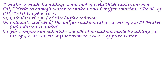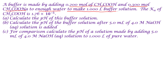Hello, everyone. Here is a buffer problem, which is multi-part, and we're going to address this problem one by one. Before we actually address the problem, I want to read the problem for you and then get started on how to solve it. The problem states: a buffer is made by adding 0.2 moles of acetic acid and 0.3 moles of sodium acetate, CH3-COO-Na, to enough water to make one liter buffer solution. The Ka for acetic acid is given to be 1.76 times 10 to the negative 5.